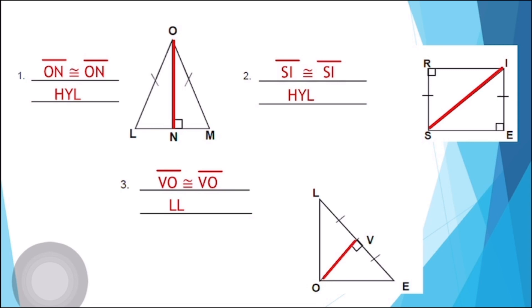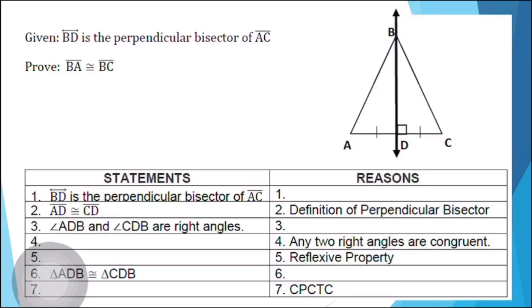Now, after studying the congruent postulates and theorems, we are ready to apply them. We can prove other theorems by using triangle congruence. Let's supply the missing statements in the two-column proof. Given that line BD is the perpendicular bisector of line segment AC, let's prove that line segment BA is congruent to line segment BC.